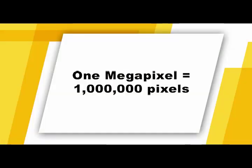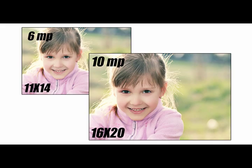Image files will vary in size depending on the resolution and quality settings you use on your camera. Digital images are made up of tiny pixels, and a megapixel is equal to one million pixels. The higher the number of megapixels, the higher the quality of the picture. For example, images from cameras with six megapixels can make high quality prints at 11 by 14 or larger, and images from 10 megapixel cameras can make high quality prints at 16 by 20 or larger.